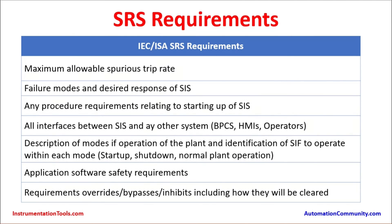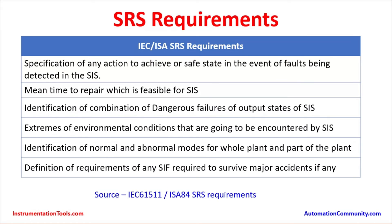All interfaces between the SIS and other systems must be specified — including the BPCS, operator HMIs, etc. Description of modes of plant operation (startup, shutdown, normal operation) and identification of drift associated with each mode must be included. Application-specific safety requirements, requirements for overrides, bypasses and inhibits and how they will be cleared, and specification of actions to achieve a safe state in the event of detected SIS faults must all be documented.